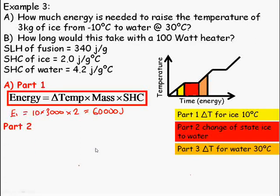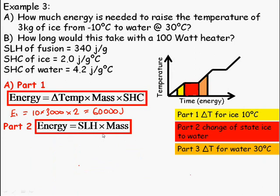Part 2, the change of state part. We're using the change of state formula and the numbers. So, specific latent heat of fusion of ice, so to change state from solid to a liquid or liquid to a solid, takes 340 joules per gram. 340 times 3,000 grams, or 3 kilograms, gives us this answer for energy for part 2.